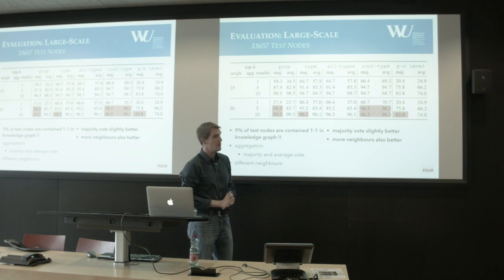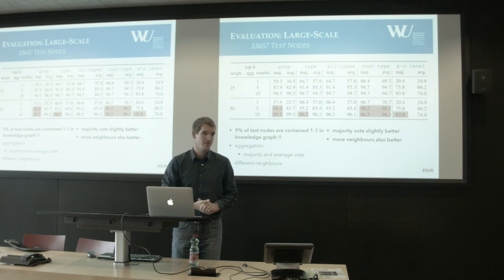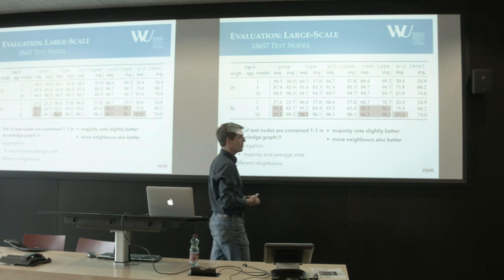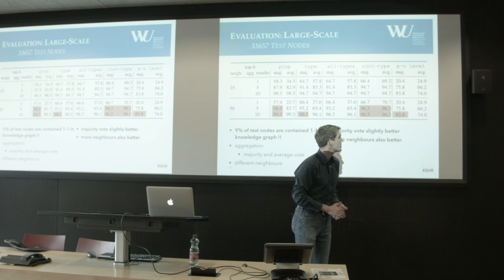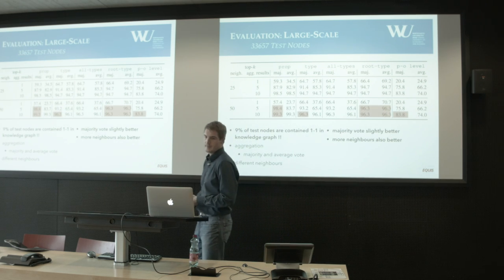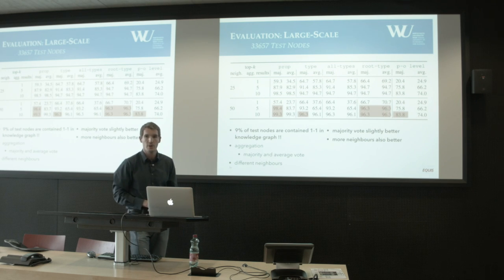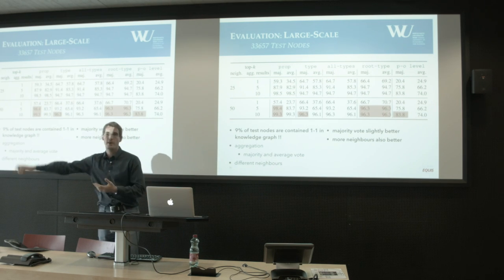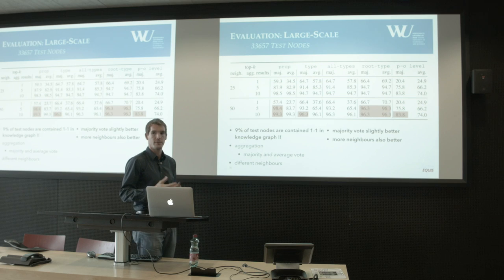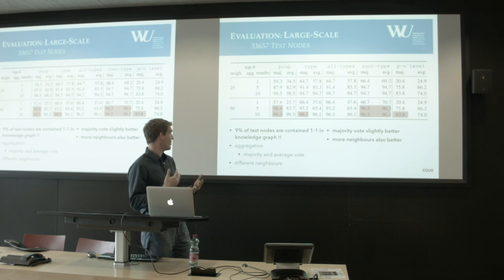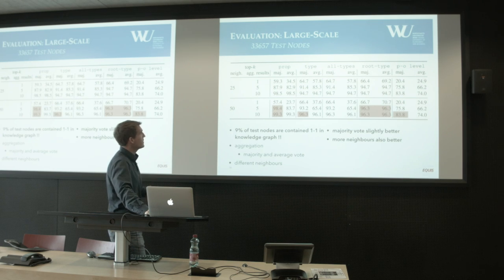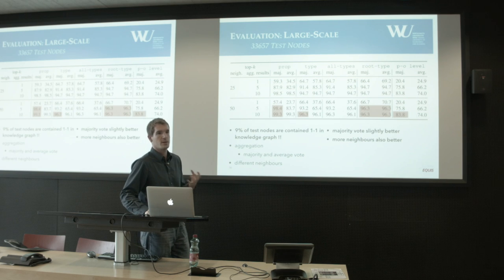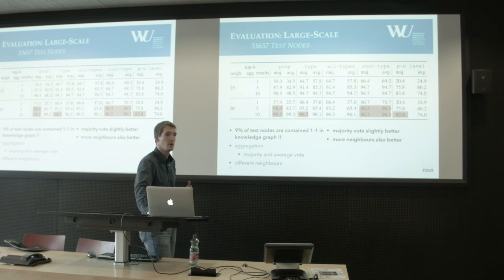For the right type we achieved around 96%, and by all types also 96%. The PO level — getting the right context — is tricky; we only reached about 80% and will need to refine the generation. But 80% still means that in 80% of cases we correctly identified, for example, the height of a basketball player in the national basketball league.